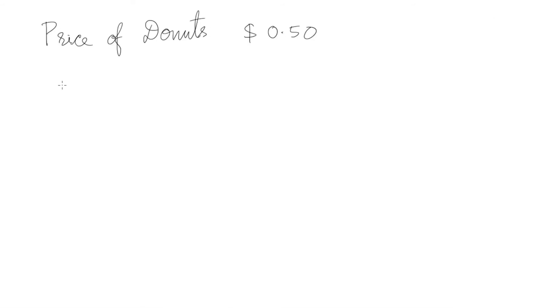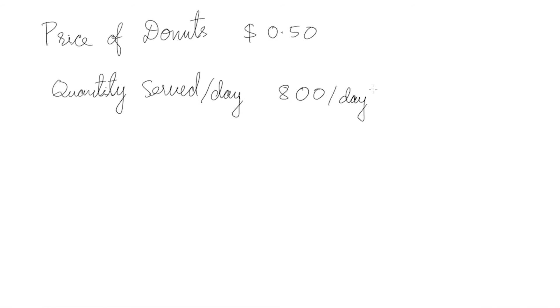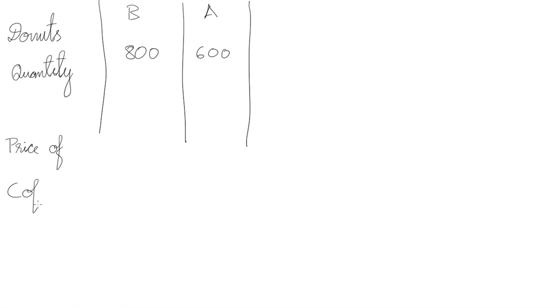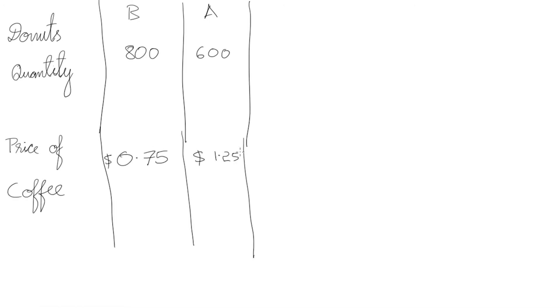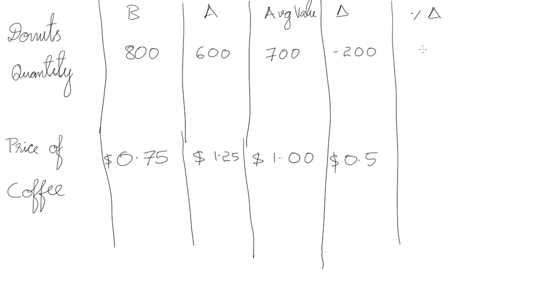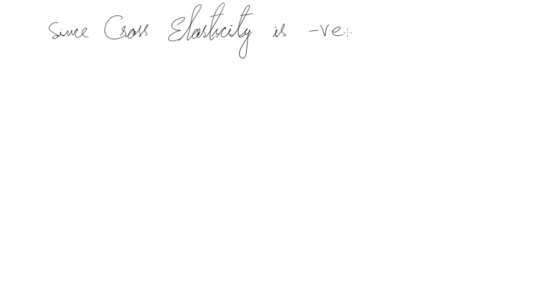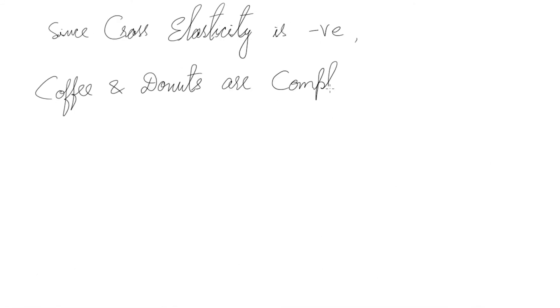Let's take another example. The quantity of donuts served is 800 per day. The price of coffee changes from $0.75 to $1.25. We look at the quantity of donuts, the price of coffee before and after, find the average value, find the corresponding change, and find the ratio. The cross elasticity comes out to minus 0.57. Since cross elasticity is negative, coffee and donuts are complements.